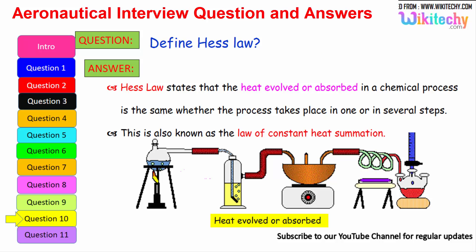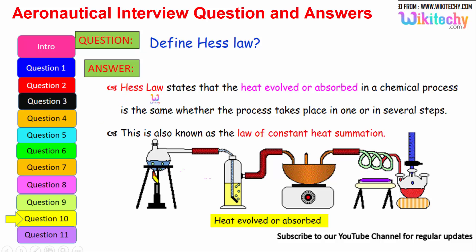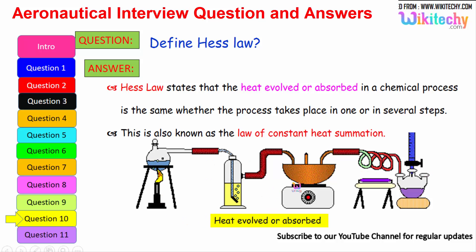Define Hess's Law. This is one of the very important questions. Hess's Law states that the heat evolved or absorbed in a chemical process is the same whether the process takes place in one step or in several steps. This is also known as the law of constant heat summation.